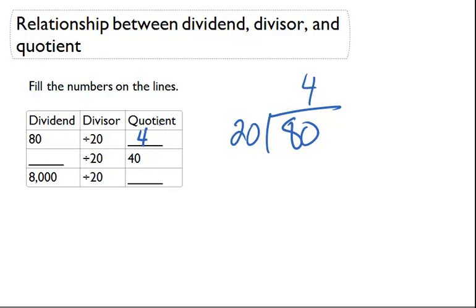So what we know about division patterns: the quotient is 40, so what we can do is 40 times 20 to get what the dividend was. So 40 times 20 is actually 800. So that is the dividend. 800 divided by 20 is going to give me an answer of 40.